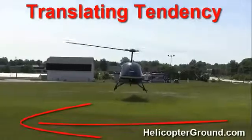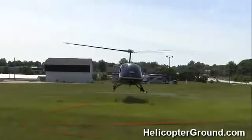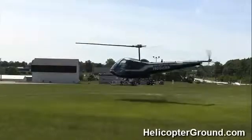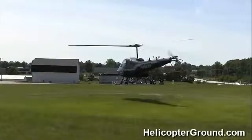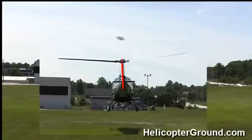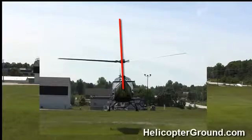The three T's are: translating tendency, transverse flow effect, and effective translational lift. On your check ride, the examiner is also going to ask how do we compensate for that. In this particular case, this is the Enstrom, and the Enstrom's rotor mast is rigged just slightly to the left to counteract the thrust of the tail rotor.